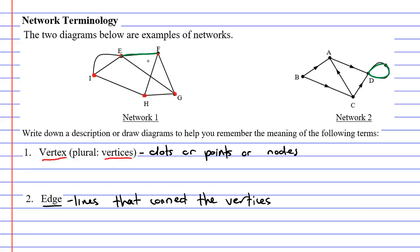If you look at the vertices I and E, you can see there's actually two edges that join I and E. We say that these vertices have multiple edges.